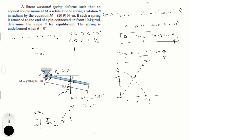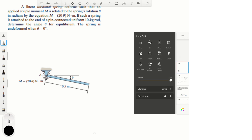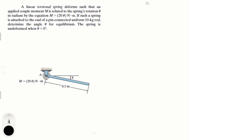These two functions intersect somewhere around theta = 1. That's the approximation. Remember we're using Newton's method of approximation, so we're going to say the approximate solution is 1 — we know it's not exact, but we'll get to the right answer. This initial estimate will make the method work.